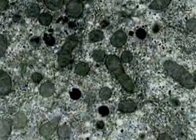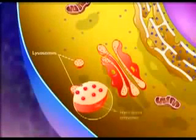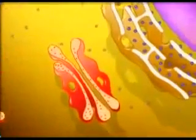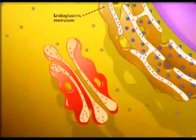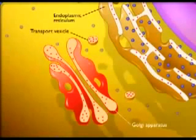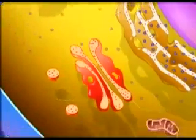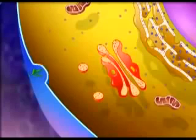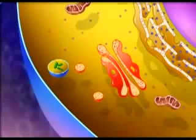Lysosomes are membrane-bound vesicles that contain hydrolytic enzymes. The hydrolytic enzymes degrade proteins, nucleic acids, lipids, and carbohydrates, and are formed in the endoplasmic reticulum. These enzymes are then transported to the Golgi apparatus by transport vesicles. The lysosomes arise from the Golgi apparatus. When particles such as viruses or bacteria are ingested by phagocytosis, the lysosome fuses with the particle-containing vesicle, called a phagosome, and delivers the hydrolytic enzymes.